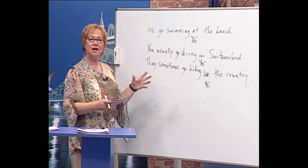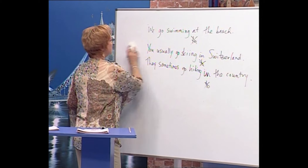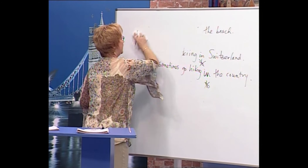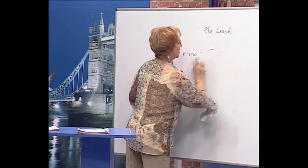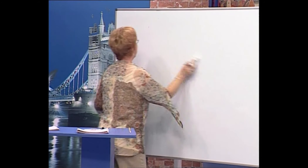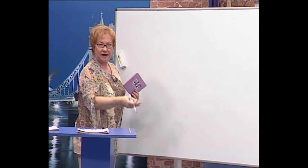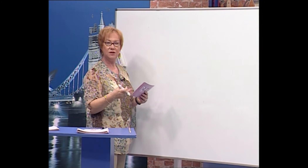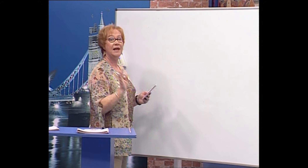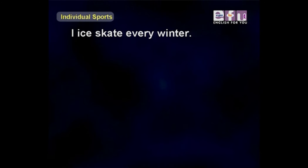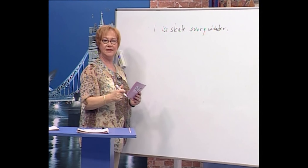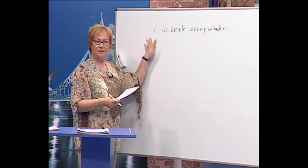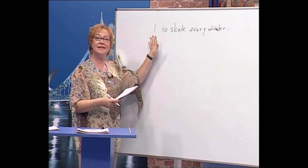Now let's look at these action verbs a little differently. There's a second way to use them — without -ing. We can use the simple present verb to talk about these sports. For example: 'I ice skate every winter.' It has the same meaning as 'I go ice skating every winter' — just a different form.